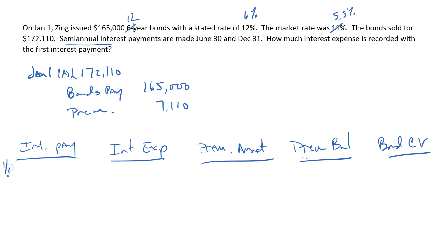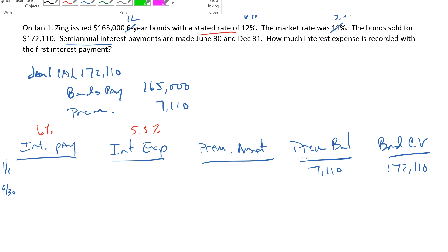On January 1 when we issue the bonds, we don't have any interest payments, we don't have any interest expense, so we don't have any premium amortization. The only things we have on this day are a premium balance of 7,110 and a carrying value — the carrying value is always the cash we received. Our first interest payment is going to be on June 30th. The stated rate is 12% for a year, or 6% semi-annually — the stated rate is only used to determine interest payments, so I write 6% above that column. The market rate is what we use to calculate interest expense: 11% annually, or 5.5% semi-annually.